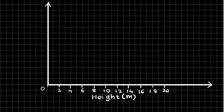For the frequency density on the y-axis, I'm going up in 0.5s but writing every second number to save time: 1, 2, 3, 4, 5, 6, and 7. This axis is labeled frequency density.